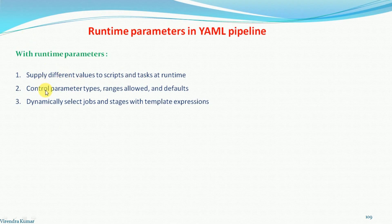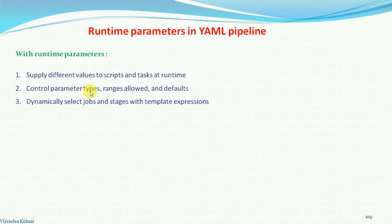Second, we can control the parameter types, ranges allowed, and the default values. You can define the types — suppose you have a parameter of string type, so you can define the type and the parameter will accept only strings. When it's a boolean value it can accept boolean. You can also define the range, suppose 1 to 100 or 100 to 500, and defaults are also there.